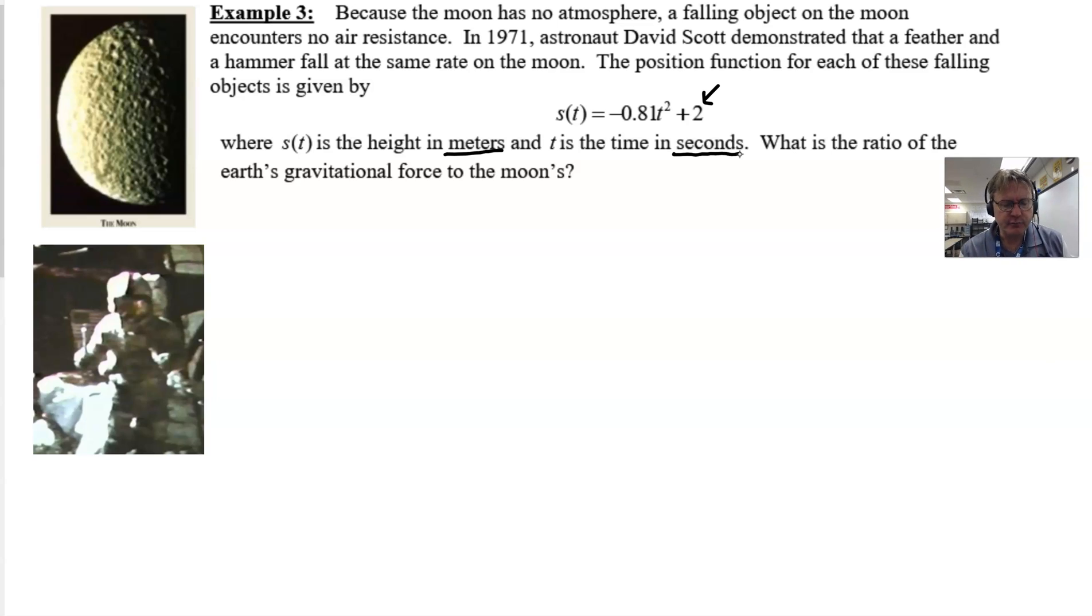Now, in order to find the ratio of the Earth's gravitational force to the moon, there's another piece of information that we're going to have to know. We would have to know if this experiment was conducted on the Earth, what would the s(t) equation be? This would require some knowledge. You would have to know that the gravitational constant in meters per second per second on Earth is -9.8. That's a number that you may have been familiar with, you may have been exposed to. Some of you might be, wait a minute, I didn't learn that number. I learned -32. Well, that's correct as well if we were dealing with feet.